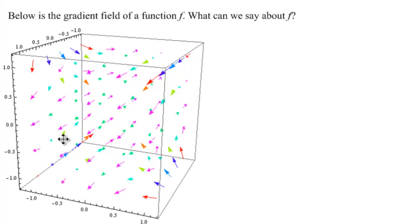Now our last example, where we give a gradient field and ask what we can say about F, is a three-dimensional one. Of course, the first thing we can say is that F must be from R³ to R—real valued, but because this is dimension three, we're coming from R³.